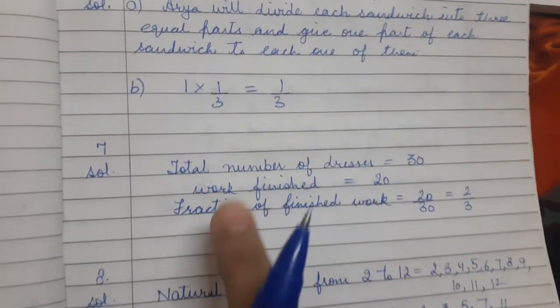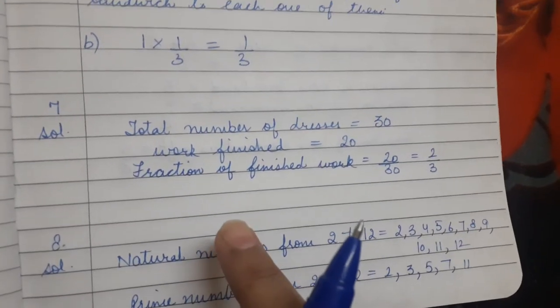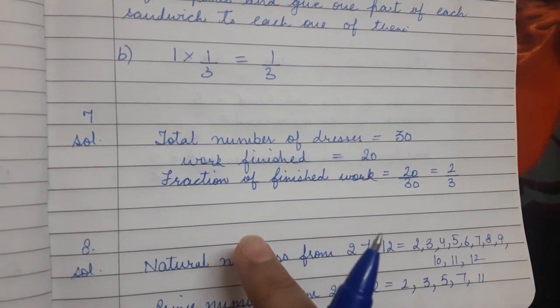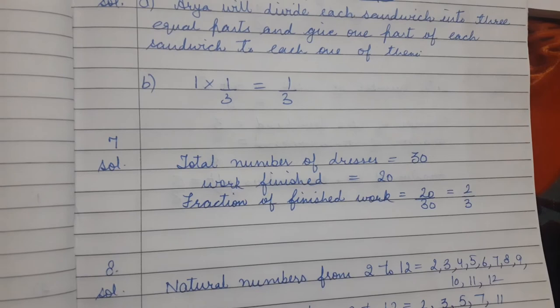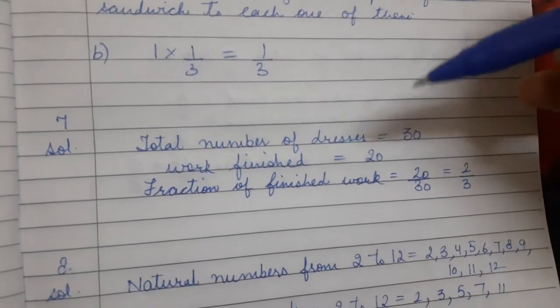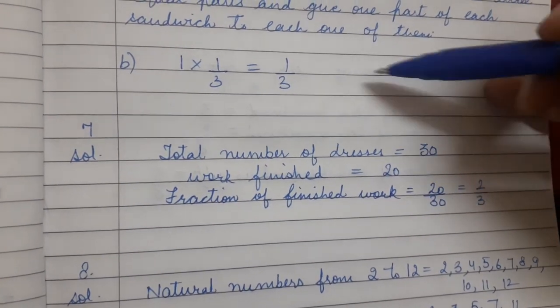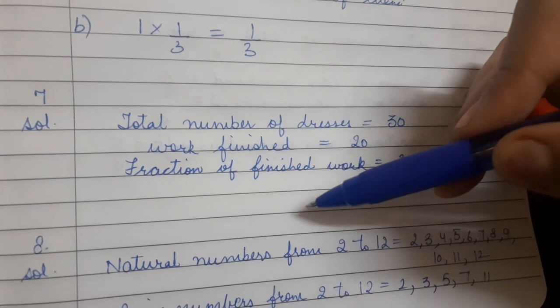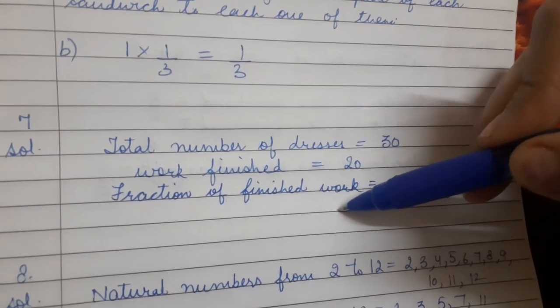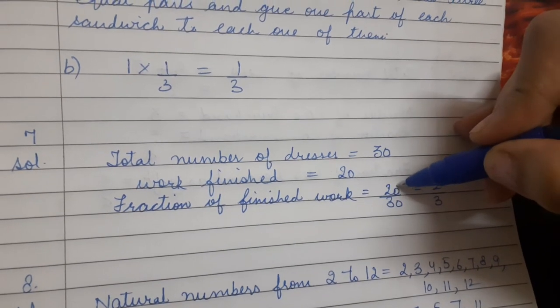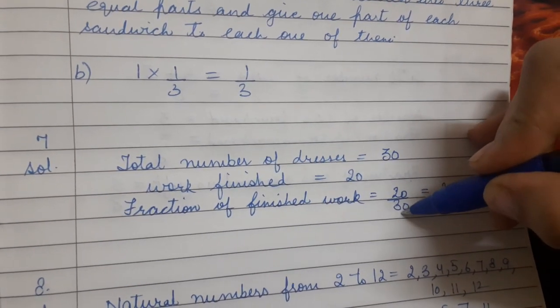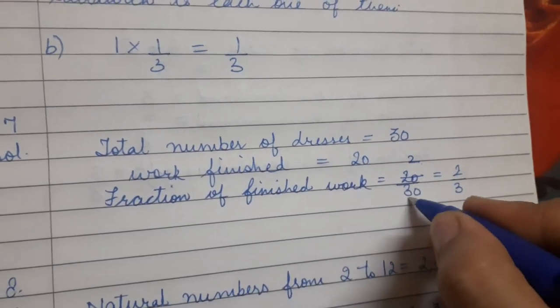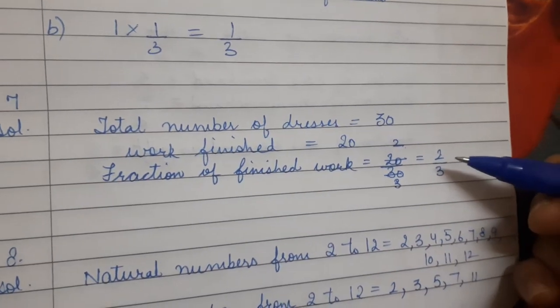Question number 7: Kanchan dyes dresses. She had to dye 30 dresses. She has so far finished 20 dresses. What fraction of dresses has she finished? So Kanchan has total 30 dresses, out of which she has dyed 20 dresses. She has finished work for 20 dresses. So 20 dresses are finished out of 30. So the fraction will become 2 by 3, as 10 times 2 is 20 and 10 times 3 is 30.